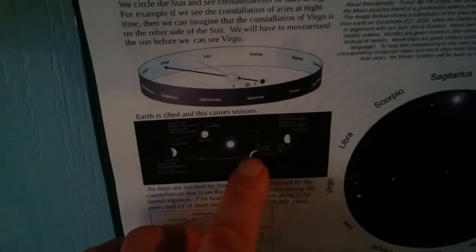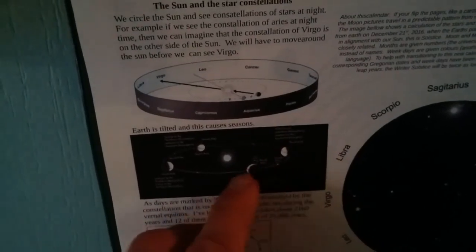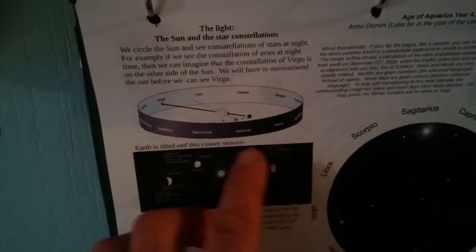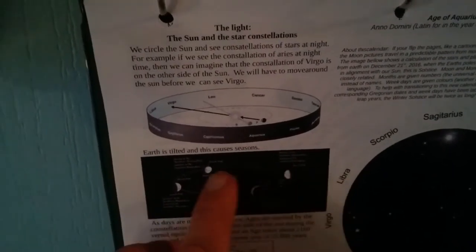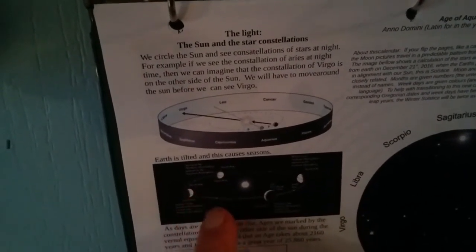It talks about the seasons and how they work, how the Earth is tilted on a little bit of an angle as it travels around the Sun. And that's why in the Northern and Southern Hemisphere we experience different seasons.